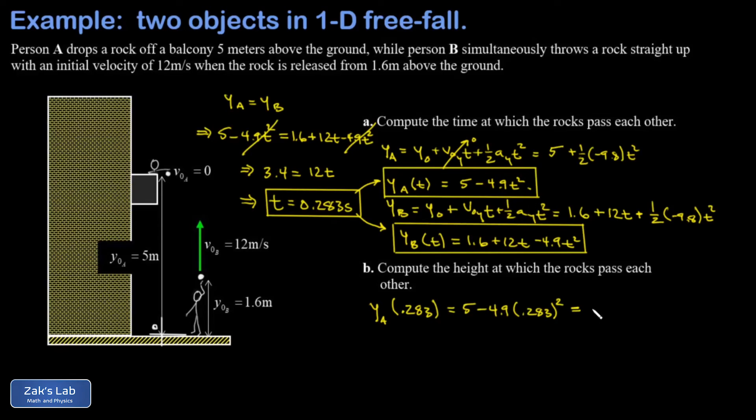When I run the numbers, I get a height of 4.61 meters, which for our coordinate system means 4.61 meters above the ground. Notice that's a height below the balcony, which makes sense because this rock is immediately falling downward when it's released.